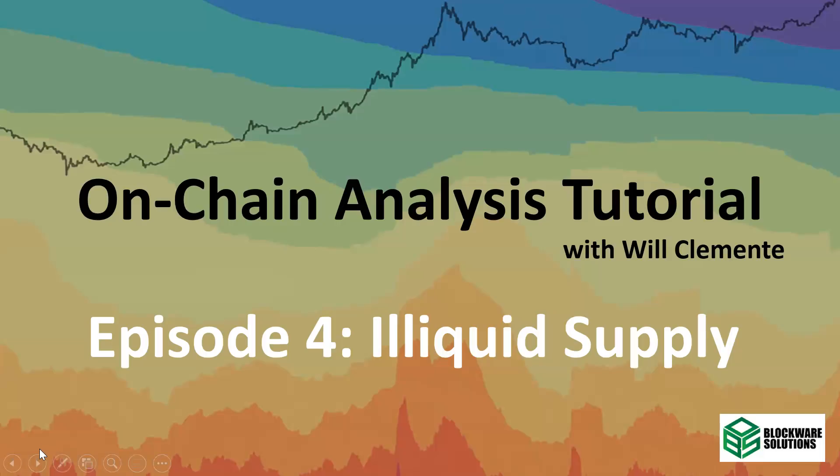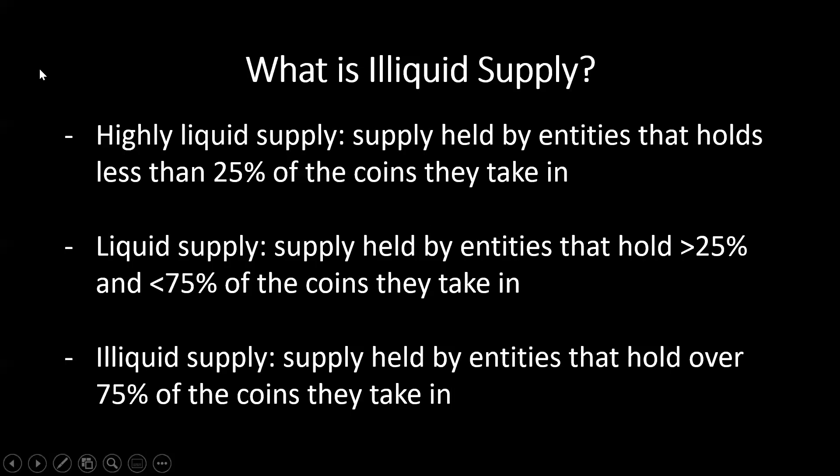Supply liquidity is one of the most requested metrics. Let's dive in and talk about what it means. Essentially, this tells you where supply is moving based on the spending behavior of all the different entities on the blockchain. Previously we've talked about what an entity is — an entity is a forensically clustered address based on the data science that the Glassnode team has done.